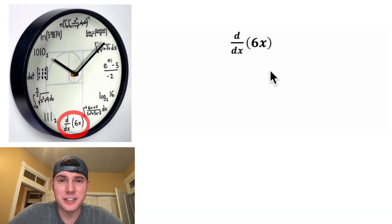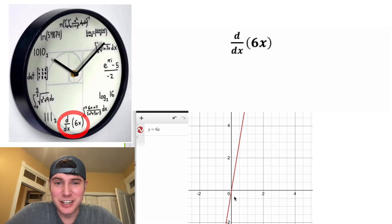Next, we have d dx of six x. Let's go back to Desmos again. If we graph the line f of x equals six x, what the d dx six x means is what is the slope of this line? And we can see here that the slope, the rise over run, would be six over one. So this is equal to six, and that's why it's at the six o'clock hour.